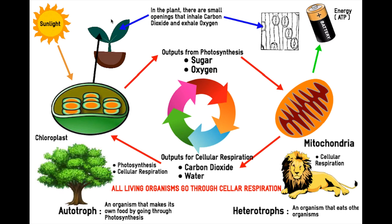There is a picture of a leaf right here, and below it is a cell. This cell is called chloroplast. Inside chloroplast, there is a pigment that absorbs sunlight. As you may know, plants need sun to grow, so the sun is an input for chloroplast.